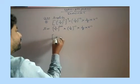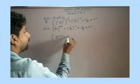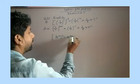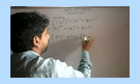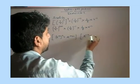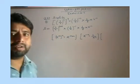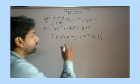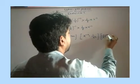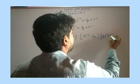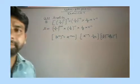Here the property is applied. First property is: x raised to the power m, whole power n, equals x raised to the power m into n. Then another property is applied: P upon Q raised to the power minus m equals Q upon P raised to the power m.